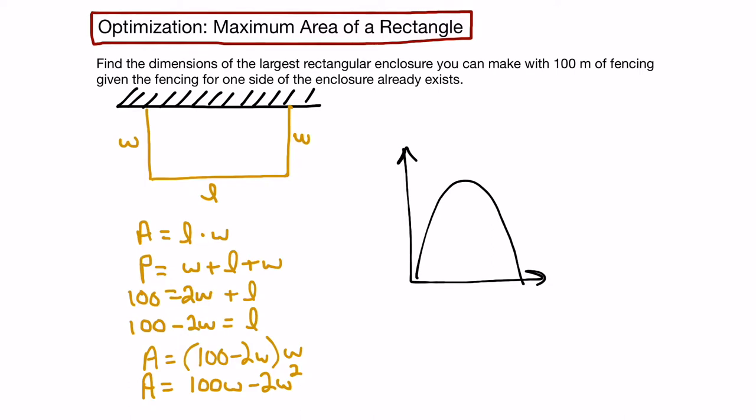We know that length and width have to be greater than 0 because we can't have negative dimensions. So we're concerned with the region where area and width are greater than 0. That would be this area right in here. We have some endpoints to our interval, and they would be 0 and 50.